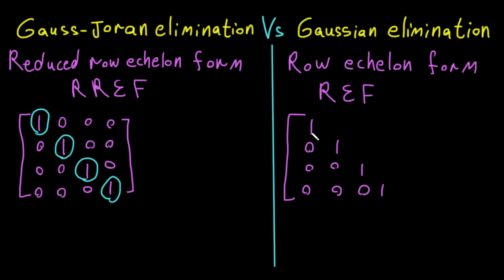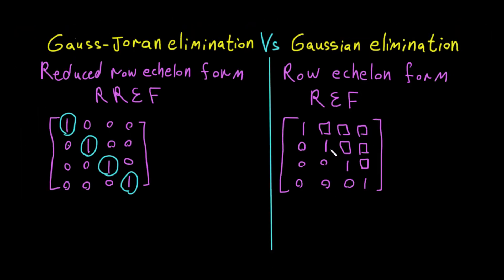In RREF, we make all entries above and below each leading one equal to zero. In REF, we only need to make the entries below the leading one zero — we don't need to zero out the entries above. So the difference is: in REF, the entries above a leading one may still have numbers, whereas in RREF, every entry in a leading one's column except the leading one itself is made zero.